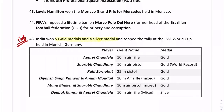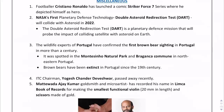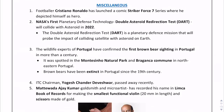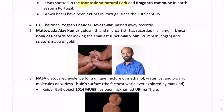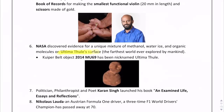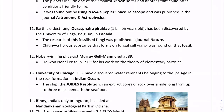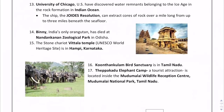Miscellaneous: NASA's first planetary defense technology is DART — Double Asteroid Redirection Test. Wildlife experts in Portugal confirmed the first brown bear sighting in Portugal — the Montesinho National Park is important. Ultima Thule: a unique mixture of methanol, water ice, and organics has been found on Ultima Thule's surface. Static points: Nandankanan Zoological Park is in Odisha; Vittala Temple is in Karnataka; Kunthankulam Bird Centre is in Tamil Nadu; Theppakadu Elephant Camp is in Tamil Nadu; Mudumalai National Park is in Tamil Nadu.